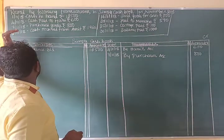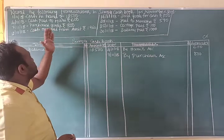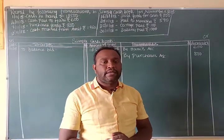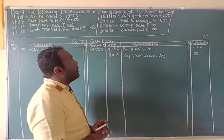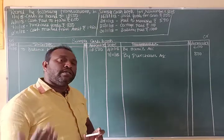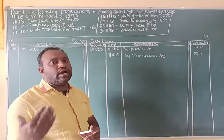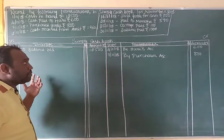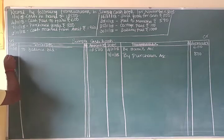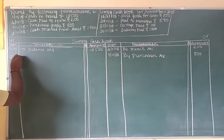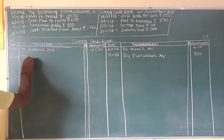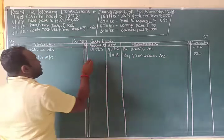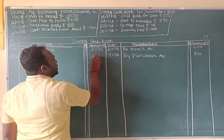12th November 2018: cash received from Amit — Rs. 1,960. The general entry is: Cash Account debit, To Amit's Account. Since it is a receipt, it goes to the debit side. Entry: 12th November 2018, To Amit's Account — Rs. 1,960.